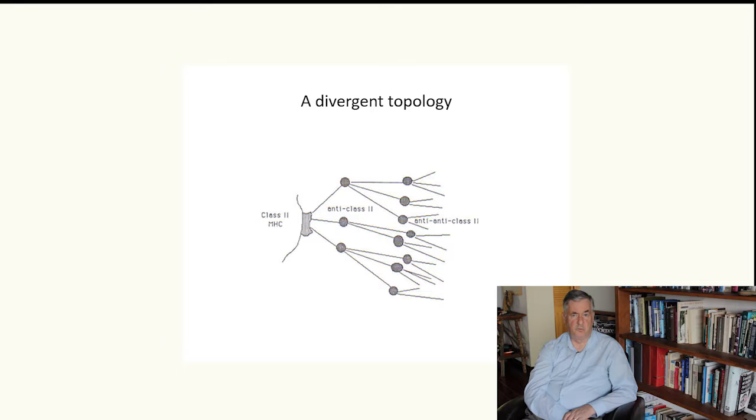So let's see how we can relate the phenomenon of IJ to MHC class 2 in terms of the network theory. In the network theory, we're interested not only in clones that recognize MHC class 2 but clones that recognize those clones. So we have anti-MHC class 2 clones and anti-anti-MHC class 2 clones. Here we have a picture of how such clones could relate to each other in terms of what I call a divergent topology.